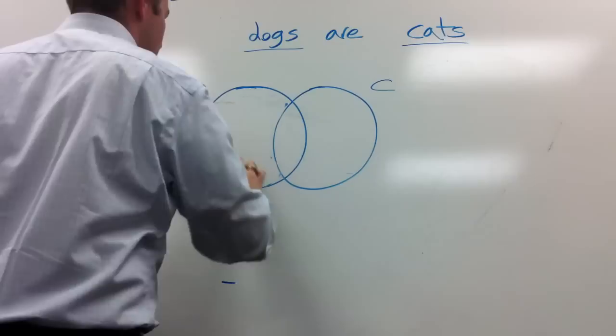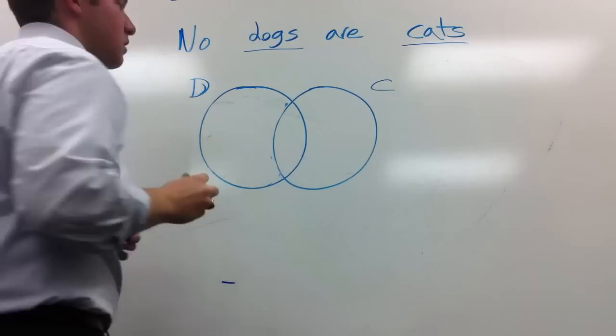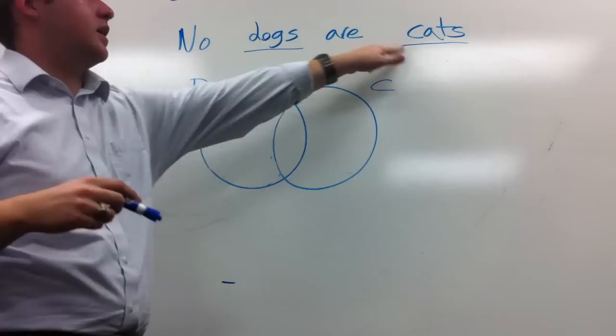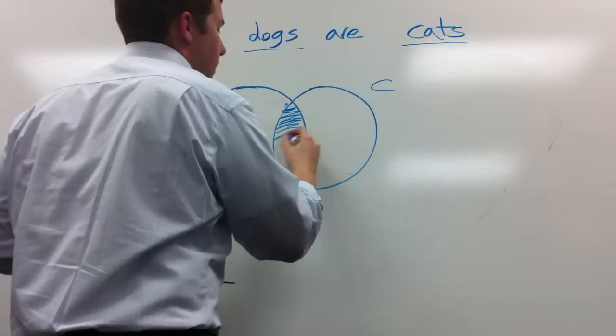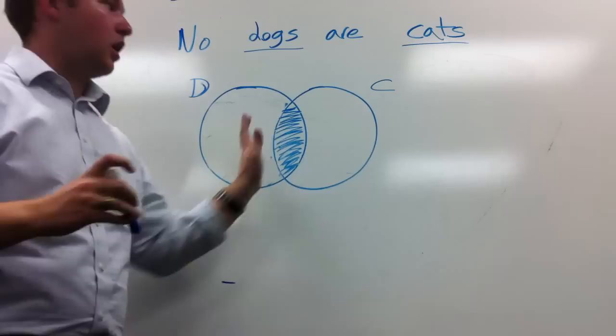All right, so the next thing we have is an E statement. No dogs are cats. So again, it's universal, so we shade. That's how we graph it. No dogs are cats. The way we demonstrate that is by shading out the middle, by saying there's no overlap. There's no dogs that are cats. There's nothing that's in the dog circle that's also in the cat circle. There's no overlap at all.